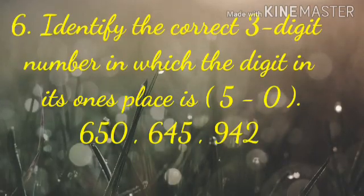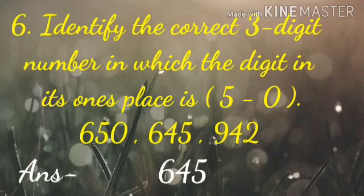Number 6. Identify the correct 3-digit number in which the digit in its ones place is 5 minus 0. Which one will be correct? Yes, the answer will be 645.